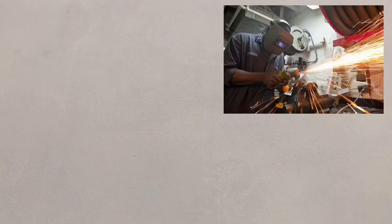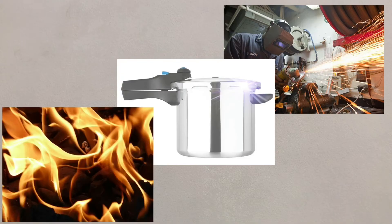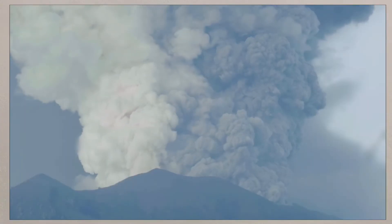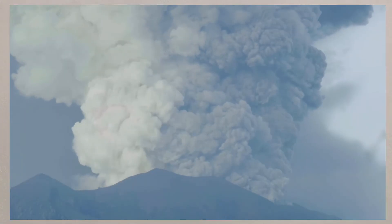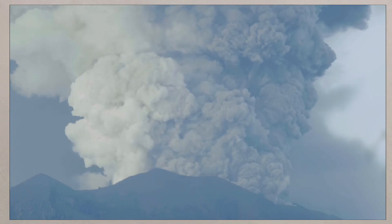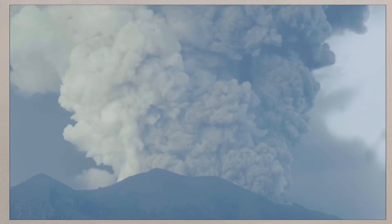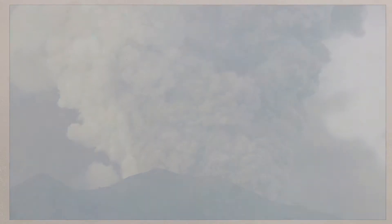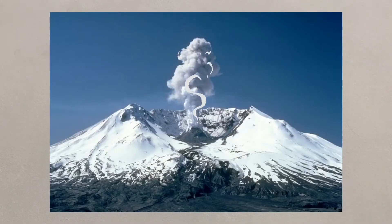Friction, pressure and heat melt the oceanic plate, creating a sticky magma that can break through the crust to create explosive eruptions and create composite volcanoes.